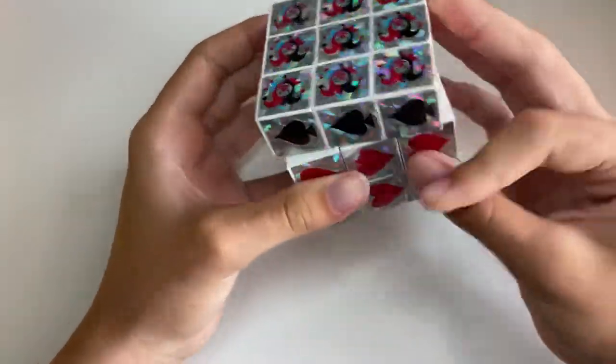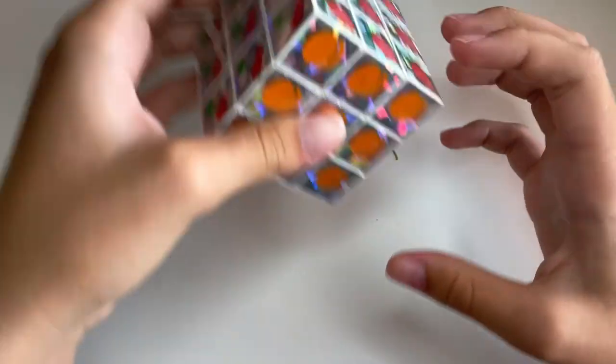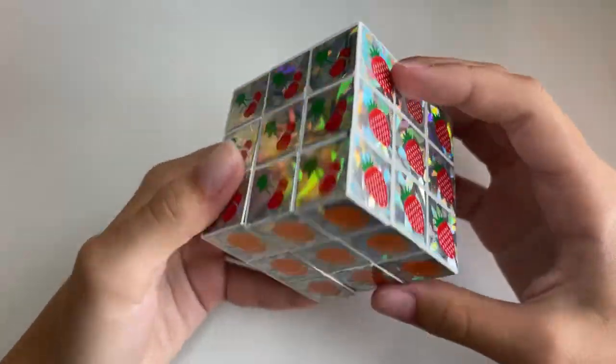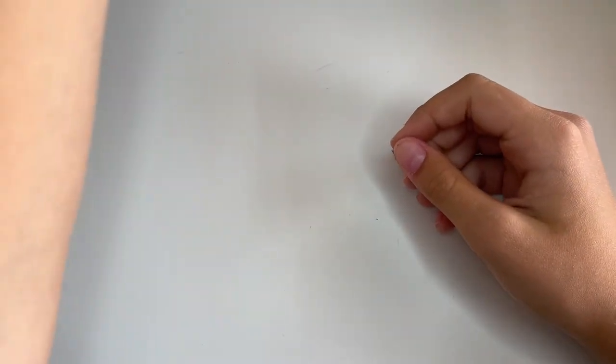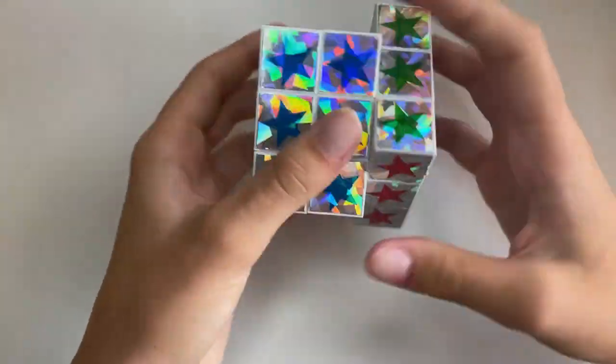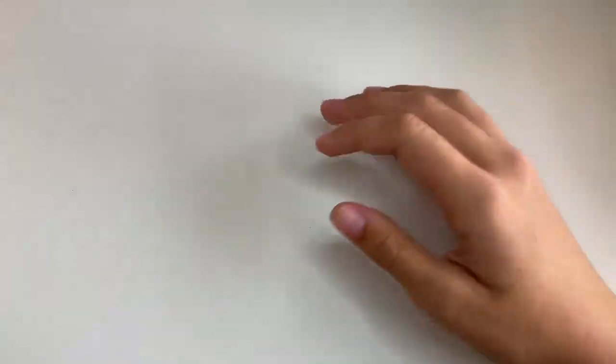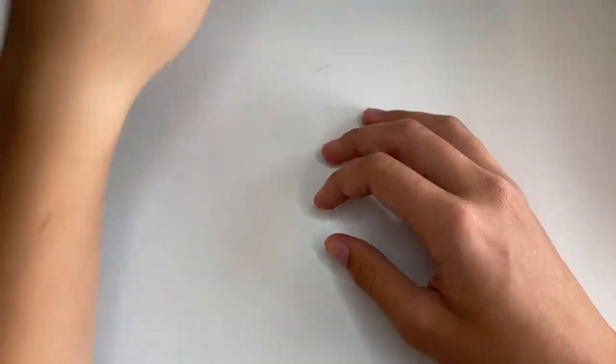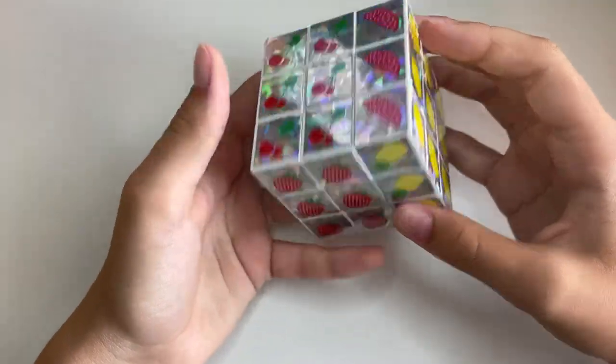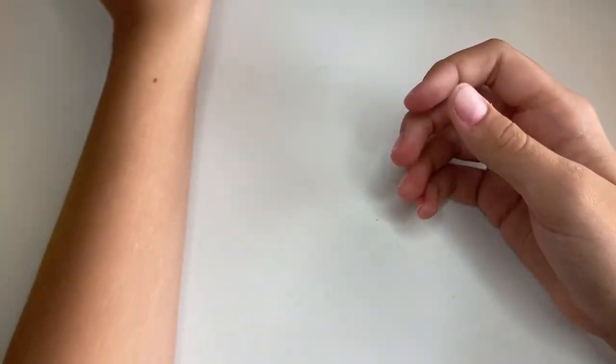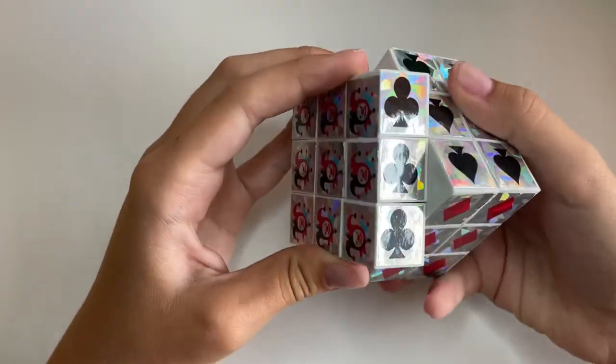We have the Joker picture cube, a fruit picture cube, a smiley face picture cube, a star picture cube. And I got all these back when I was trying to sell stuff on my cubing website, but it was kind of pointless, so I just kept them. This is another fruit cube and another Joker cube.